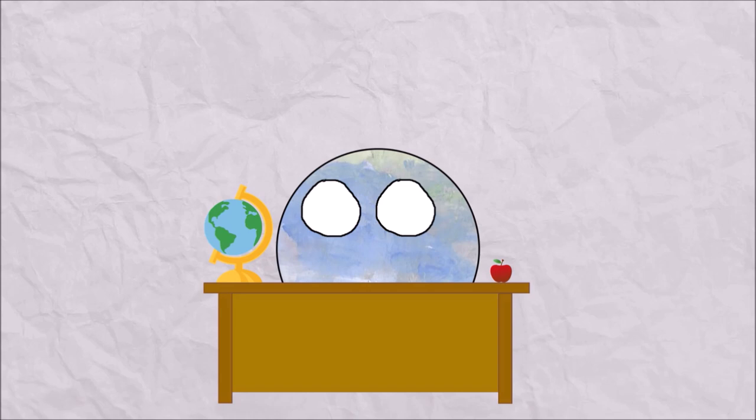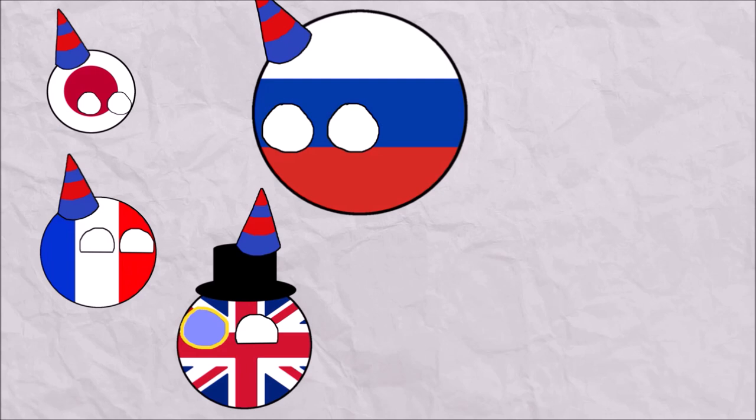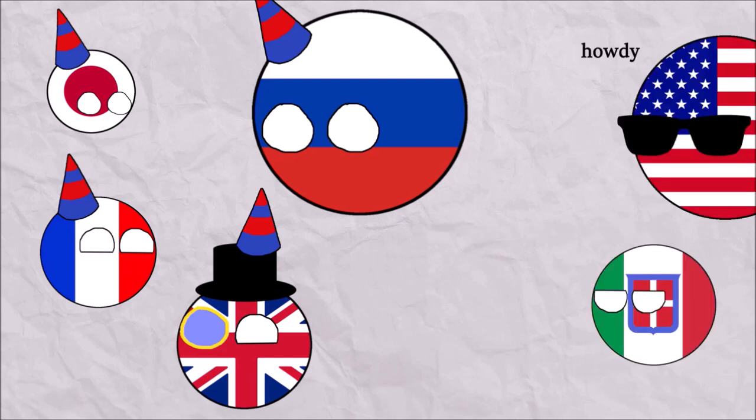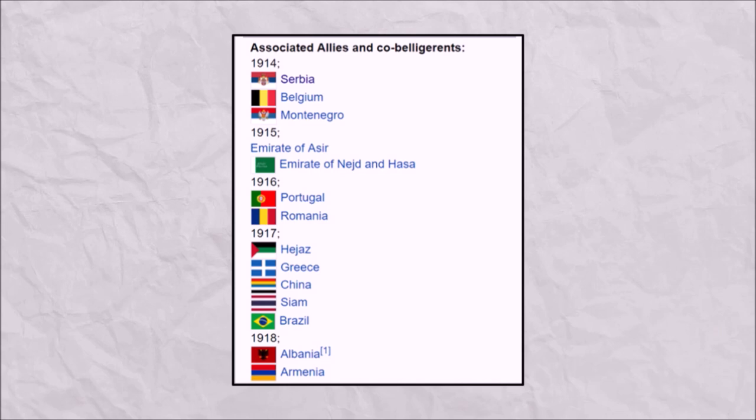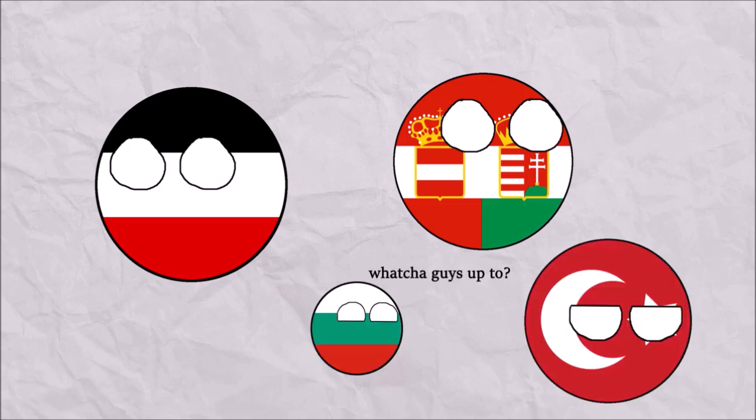After everyone had finished declaring their wars, the initial Allied powers consisted of France, Russia, Great Britain, and Japan, with Italy joining a bit later, and America joining much later. There were quite a few other nations that joined the Allies too. The Central Powers consisted of Germany, Austria-Hungary, and the Ottoman Empire, and later Bulgaria.